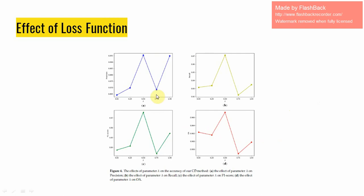Loss function plays an important role in the final change detection results. Lambda, which balances the weight of binary cross-entropy loss and DICE coefficient loss, is of great significance. Lambda was evaluated from 0 to 1.0 and corresponding evaluation metrics were calculated. When lambda is set to 0, only binary cross-entropy loss is utilized, resulting in very low precision, recall, F1, and overall accuracy. All four quantitative evaluation metrics increased with the increase of lambda, verifying the effectiveness of combining both losses. Precision, recall, F1, and overall accuracy reached their maximum when lambda was set to 0.5, and decreased when lambda was further increased. Therefore, lambda was set to 0.5 for best performance.